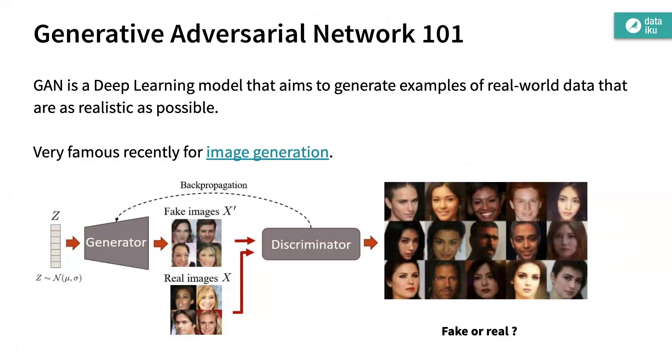The key trick is to break down the network in two parts. You start by generating random data, then you have a discriminator network that learns to distinguish generated data from real data.